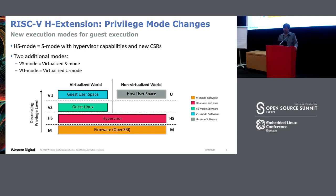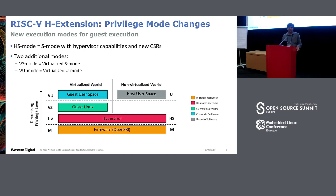The RISC-V H extension changes the privilege levels. It adds a new HS mode — S mode with additional hypervisor capabilities — plus VS mode and VU mode. VS mode runs the guest kernel or guest Linux, and VU mode runs the guest user space. It's designed so that Linux can run unmodified as a hypervisor in KVM, or unmodified as a guest in VS mode — that's why it suits both type 1 and type 2. The color coding used here will be consistent across the slides.